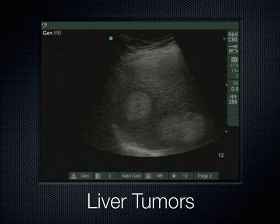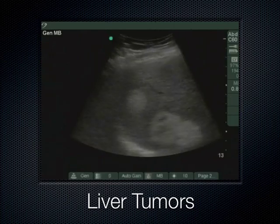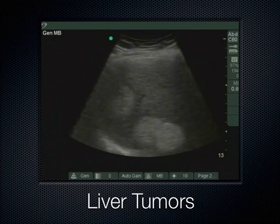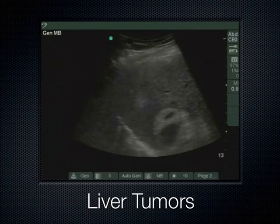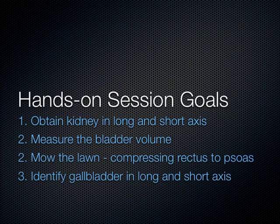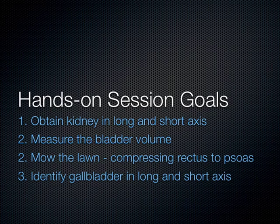We can also stumble across liver masses — solid tumors visible near the diaphragm are something you'd obviously want to report. For today's hands-on session: get the kidney in long and short axis, demonstrate bladder volume measurement to the instructors, mow the lawn with compression bringing the rectus abdominus down to contact the psoas, and show the gallbladder in long and short axis.